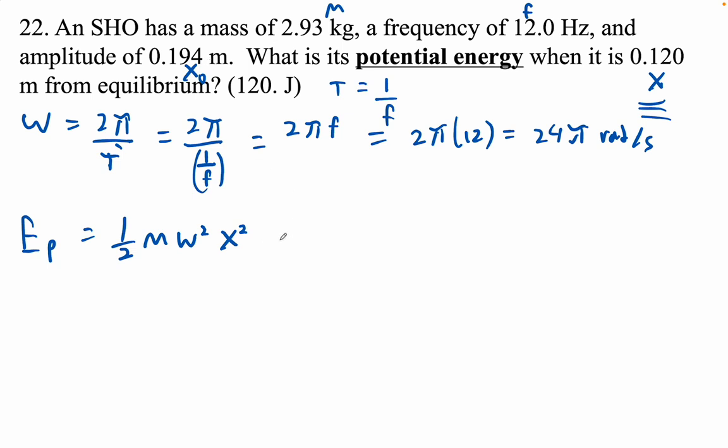One half times 2.93 times 24π squared (that's our omega) and then times where it is, at 0.12. There are harder ways to do this by the way. So 0.5 times 2.93 times the quantity 24π squared times 0.12 squared.